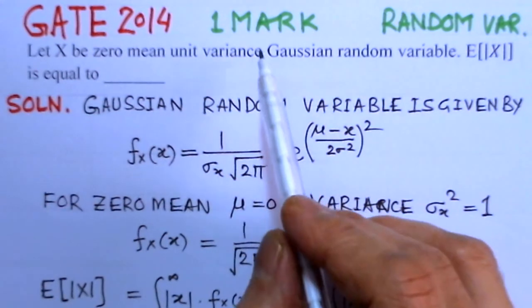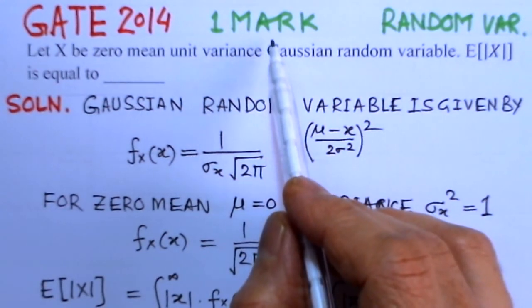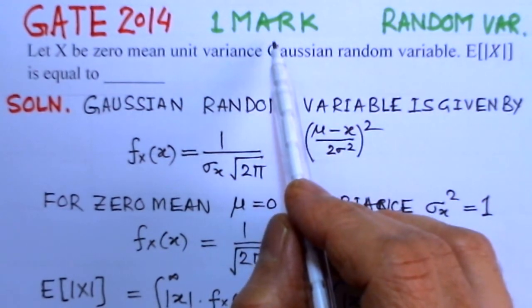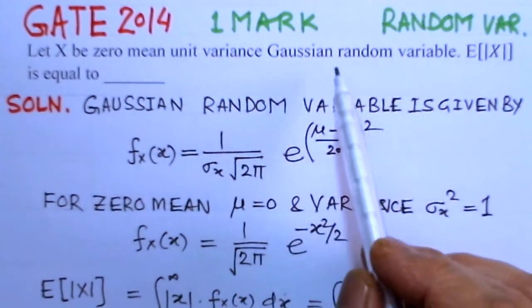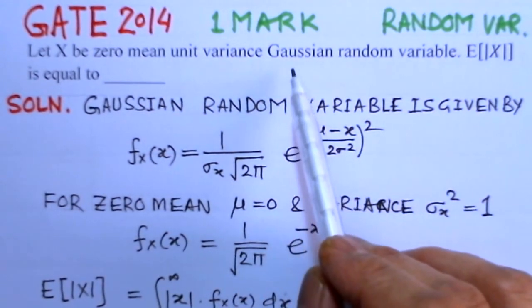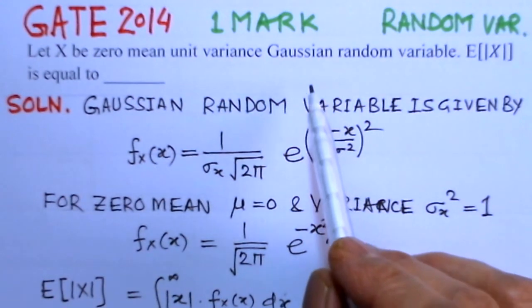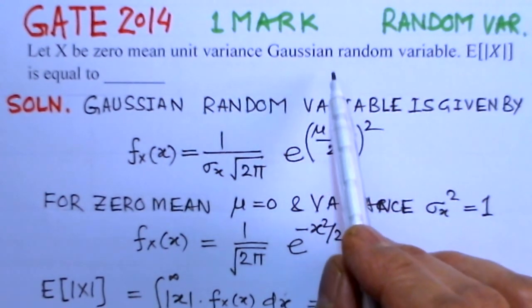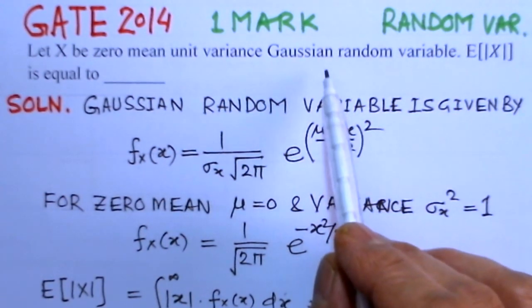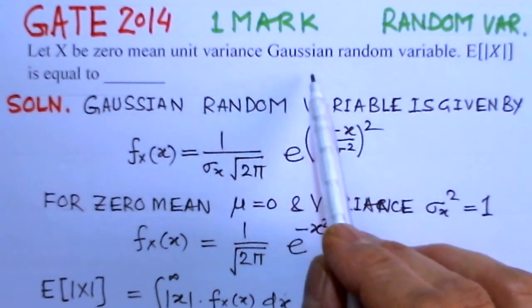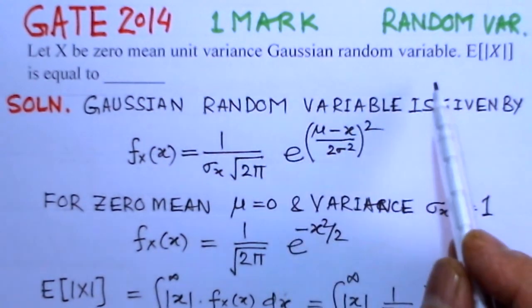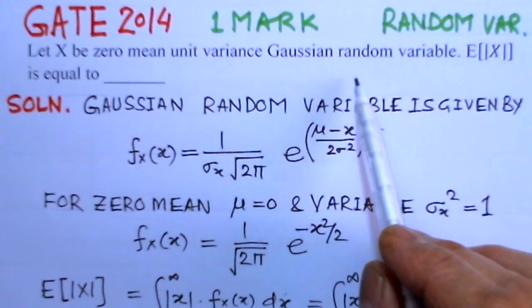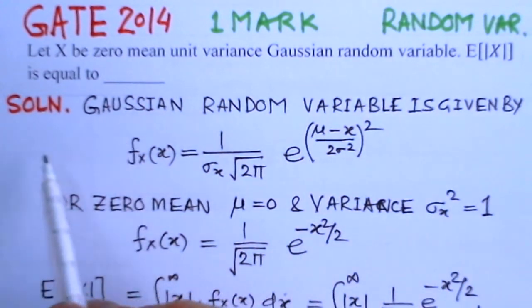Although this problem is only for one mark and it is quite a simple problem, it is being included here because Gaussian distribution is supposed to be one of the very important distributions, and you should remember the distribution. In this problem the distribution was not given. You should remember the Gaussian distribution.